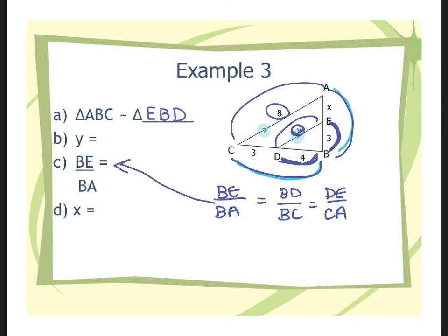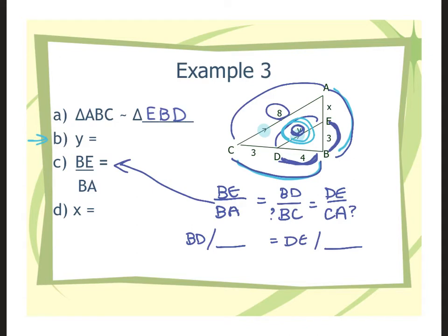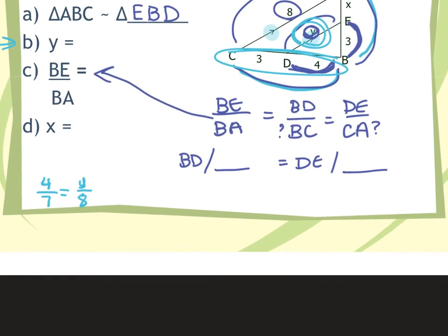The proportion setup fills in part C: BE to BA, BD to BC, and DE to CA — right side of small to right side of big, bottom of small to bottom of big, slanted side of small to slanted side of big. On tests, this appears as a drop-down format where you pick which side goes in each blank.